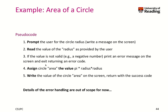Here is another pseudocode, which is a bit more verbose. Prompt the user for the circle radius — write a message on the screen. Read the value of the radius, and if the value is not valid, for example a negative number, print an error message on the screen. Only if the value is valid, assign circle area the value pi times radius times radius, and then finally print it. Error handling is something we will address as part of the module, but let's not go into too much detail for now.